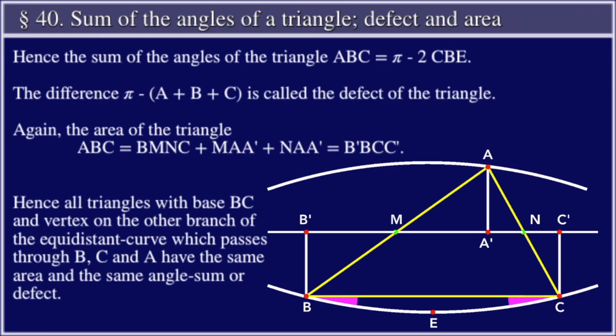Hence the sum of the angles of the triangle ABC is equal to π minus 2CBE. The difference π minus the quantity A plus B plus C is called the defect of the triangle.